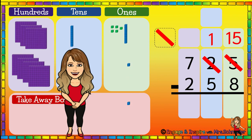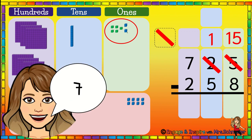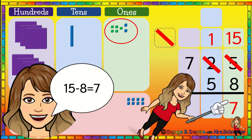So we subtract eight. How many ones are left? Let's see — one, two, three, four, five, six, seven. Seven ones are left. Fifteen minus eight equals seven.